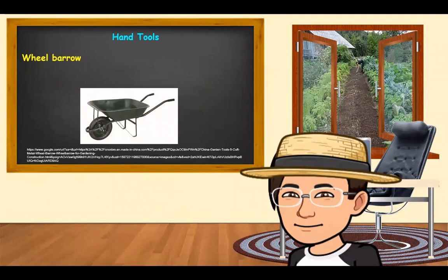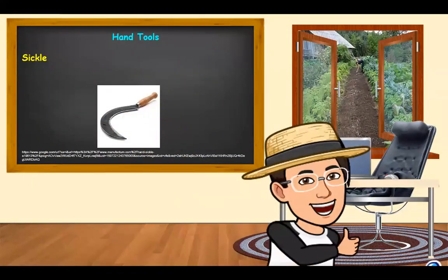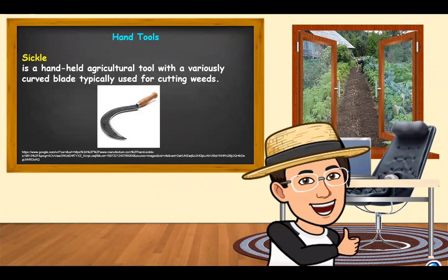Next is the wheelbarrow. A wheelbarrow is a hand tool used for hauling trash, manures, fertilizers, planting materials, and other equipment. Next hand tool is what we call the sickle. Normally, a sickle is used by a farmer, and it is a hand-held agricultural tool with a variously curved blade typically used for cutting weeds.